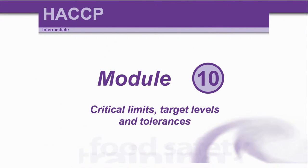This is module 10 of the HACCP intermediate course and here we'll be looking at critical limits, target levels and tolerances. Just a few bits of jargon to get your head around, and I'll be giving the definitions and explaining in more detail throughout this module.